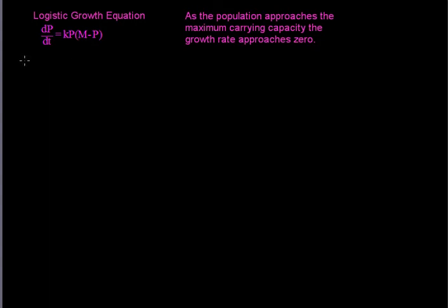Where k and m are constants. m is the maximum growth capacity of the population. So first we need to start off by separating variables. So we end up with dp over p times m minus p equals k dt.